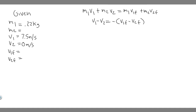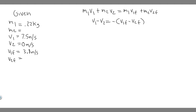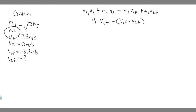Immediately after the collision, the incoming ball bounces backward at 3.8 meters per second. Since it's going the opposite direction and we define rightward as positive, V1_final = -3.8 m/s. We need to find V2_final, the velocity of the target ball, and M2, the mass of the target ball.